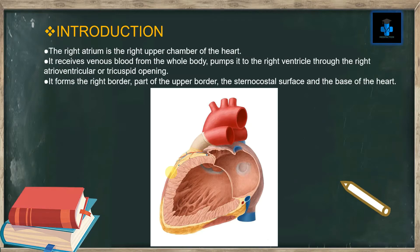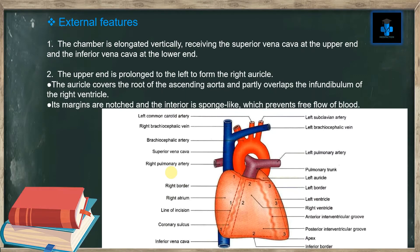The right atrium is the right upper chamber of the heart. It receives venous blood from the whole body and pumps it into the right ventricle through the right atrioventricular, also known as the tricuspid, opening. It forms the right border, part of the upper border, the sternocostal surface, and the base of the heart.